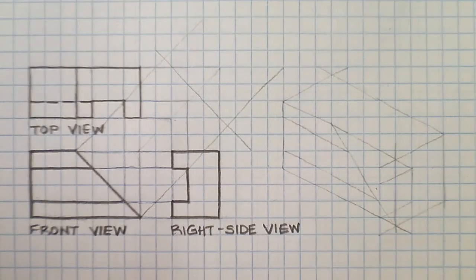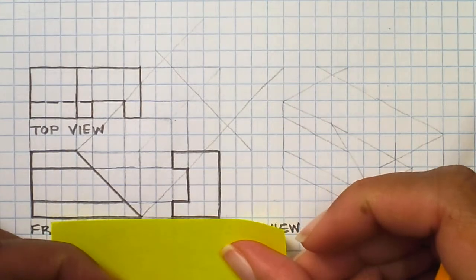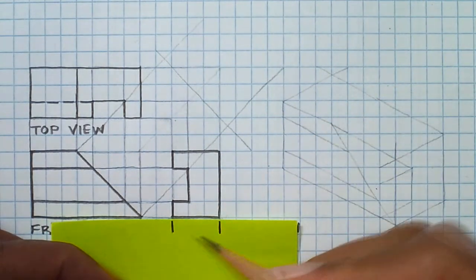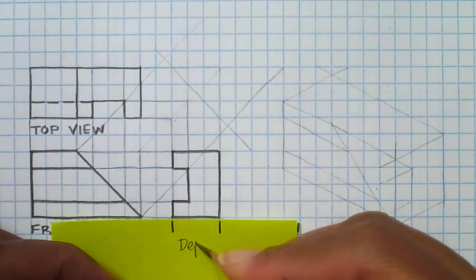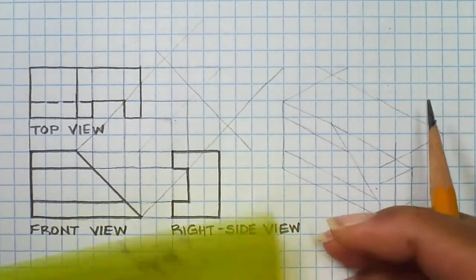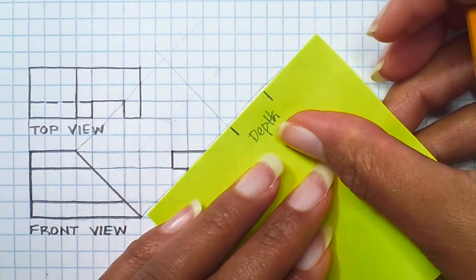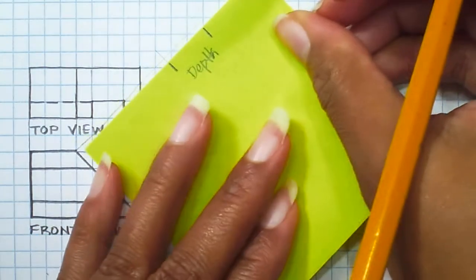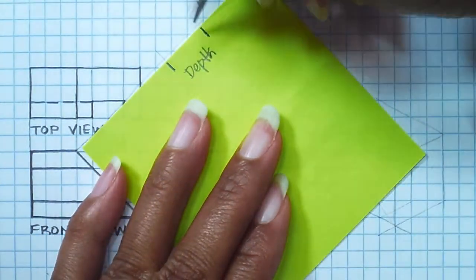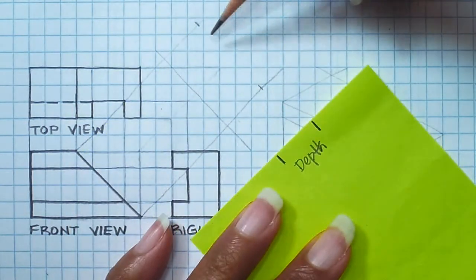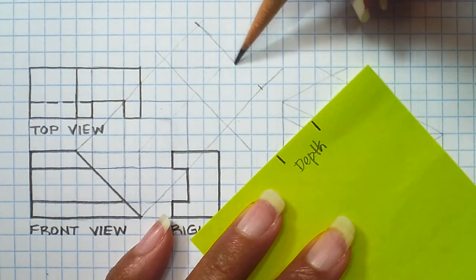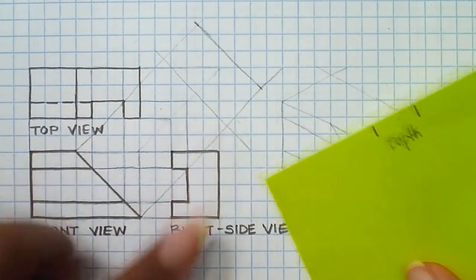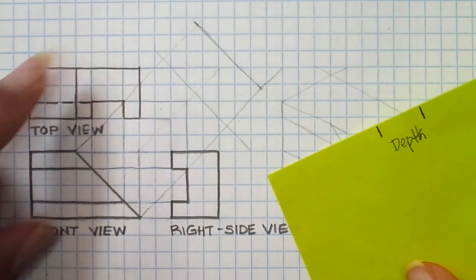Now I'll take a sheet of paper and I'm going to mark out the depth since we're doing a depth auxiliary view. So this depth, I'm going to transfer this to my auxiliary reference plane. I use the auxiliary reference plane as to where I start my drawing. Once I've gotten that, I'm going to construct my line. It should be parallel to my auxiliary reference plane. So now this is the depth that I've transferred from my right side view or it can be from the top view.